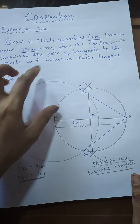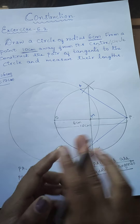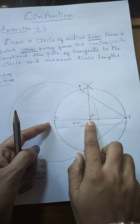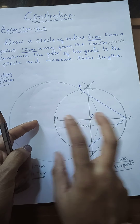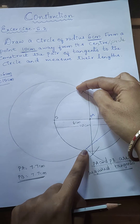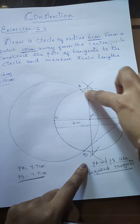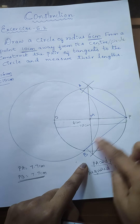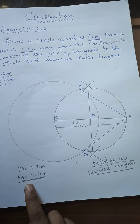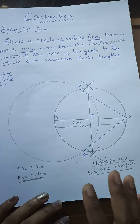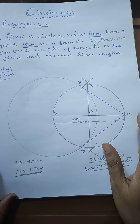To recap: first draw a circle of the given radius, then mark the point at the given distance from the center and draw the perpendicular bisector. Take the intersecting midpoint as M, use OM as the radius, and draw another circle. These two circles meet at two points A and B. Since P is an external point, PA and PB are the required tangents, each measuring 7.7 cm. I hope you understood — watch the video once or twice and practice along with it in your notes.